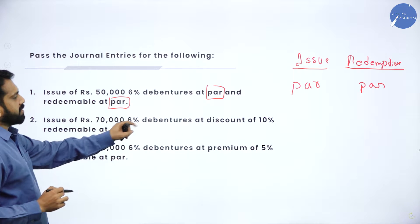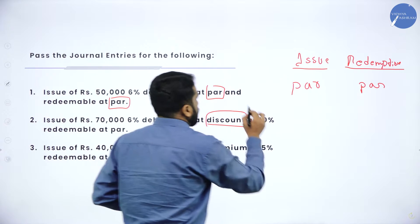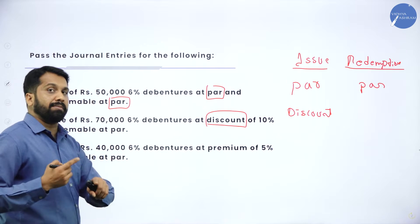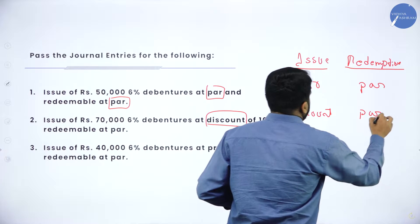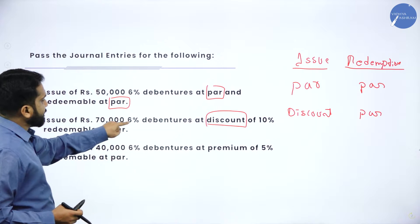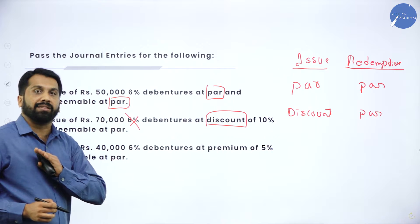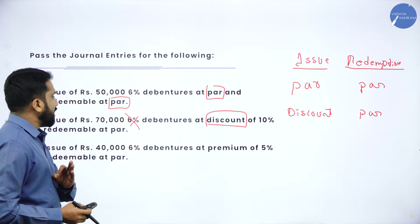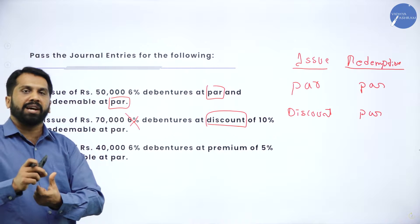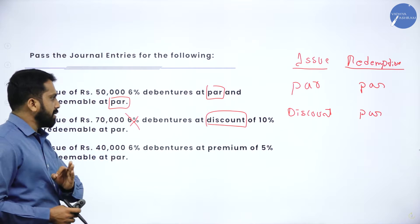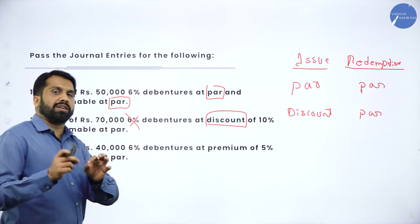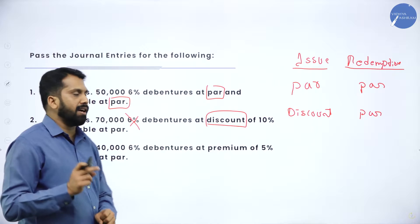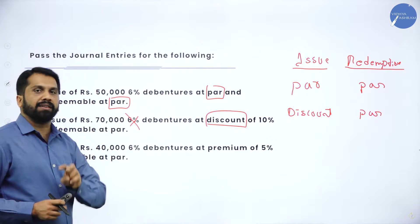Second one: issue of 70,000, 6% debentures at discount, and redeemable at par. Your issue will be at discount and redemption at par. Remember, while doing the problem, whatever they have mentioned — 6% debenture — this 6% we will not calculate anywhere. Whatever 10% discount they have given, we have to calculate. Don't be in a bias: this 6% is only the name of the debenture. You should not consider this 6% for any calculation. Whatever discount or premium percentage is given, those things we should consider.